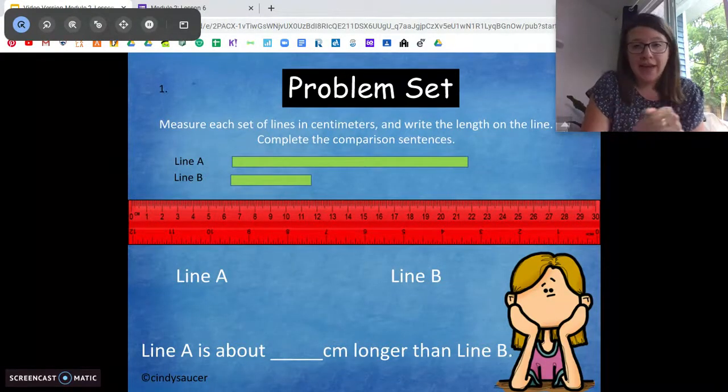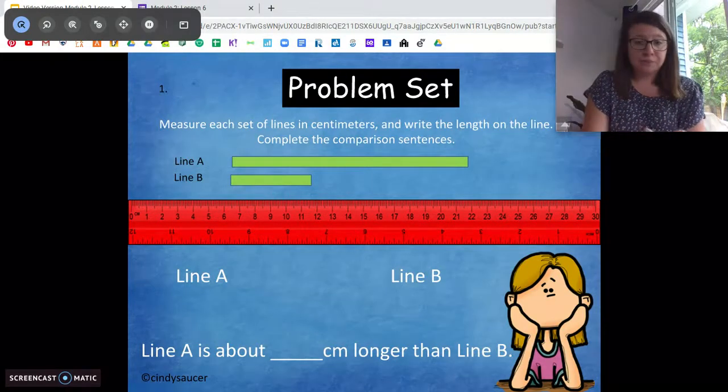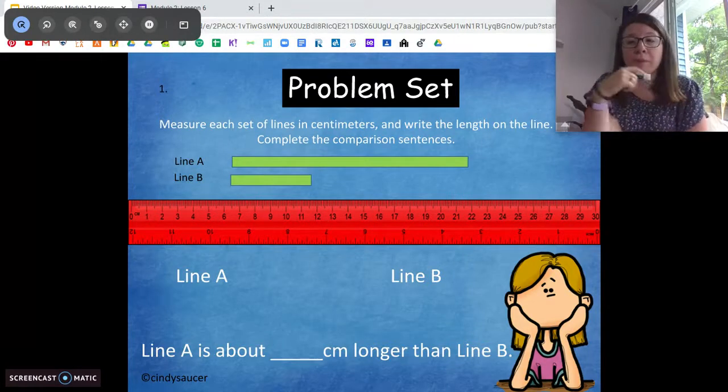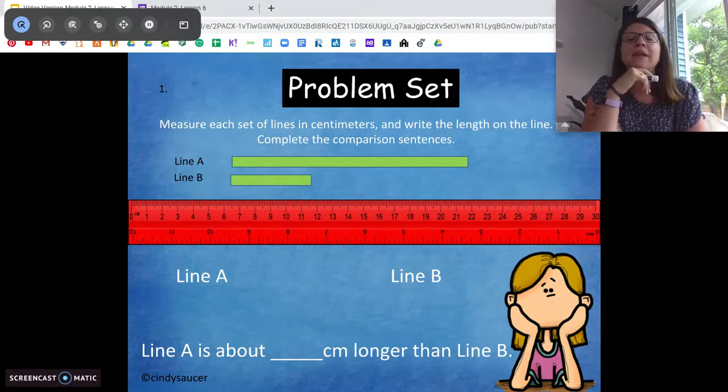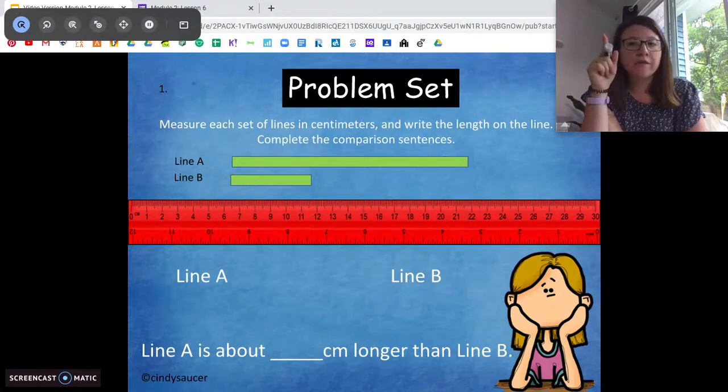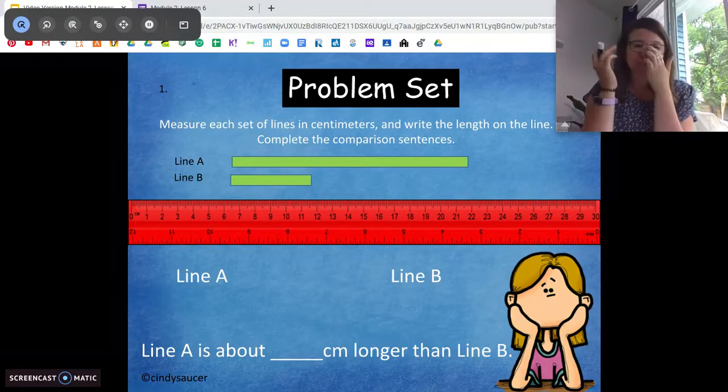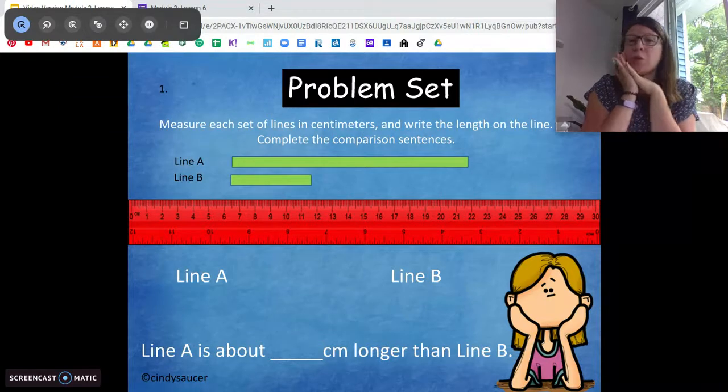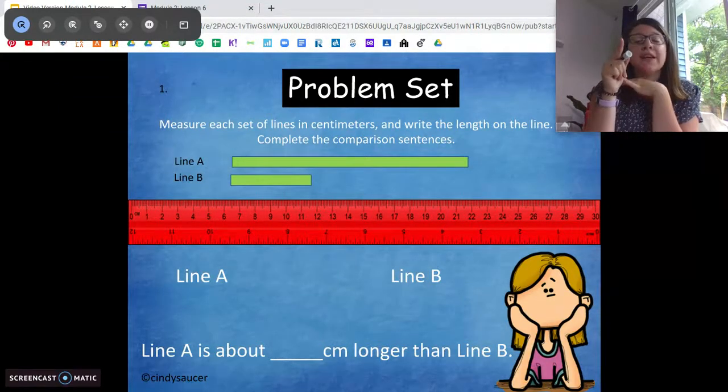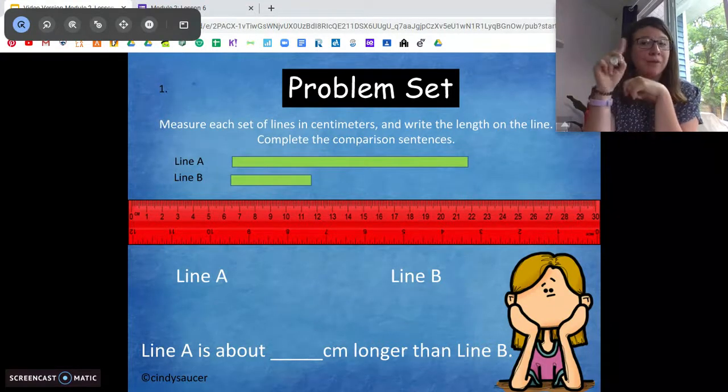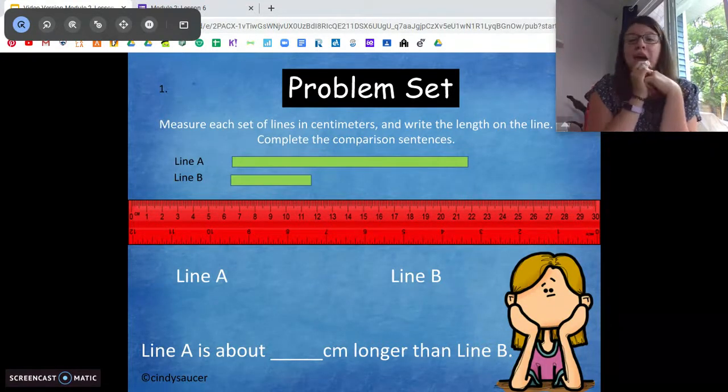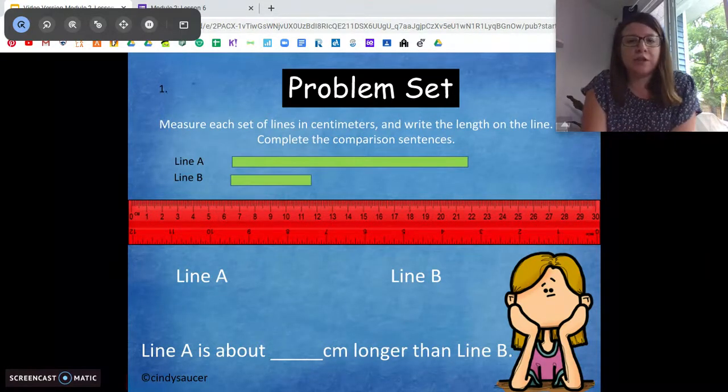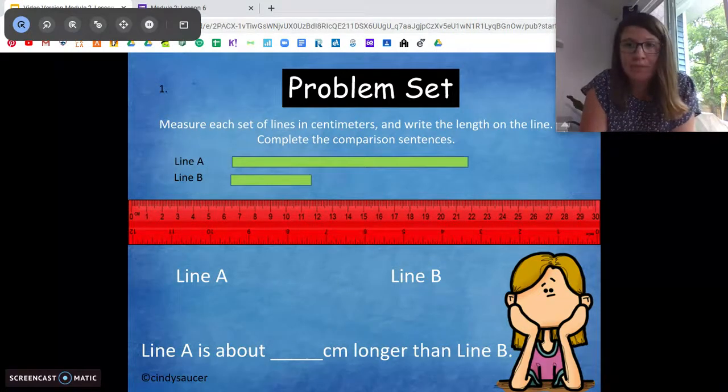What we're going to do is we're going to find the difference between two measurements. So we have two lines here, line A and line B. Now what we need to figure out is the length of line A and B because our problem on the bottom says line A is about blank centimeters longer than line B. In order to figure that out, we have to know the lengths of both of the lines. So go ahead and pause the video and figure out the lengths of the lines. What you're going to notice is on the ruler, these lines are not starting at the end point. So what I would do is either frog jump and count the centimeters or do your subtraction. Whatever is easier for you. Figure out the length of line A and line B. Unpause when you're ready.